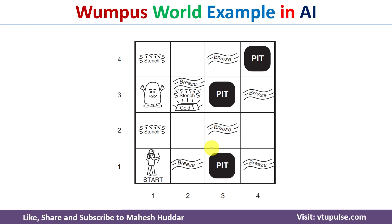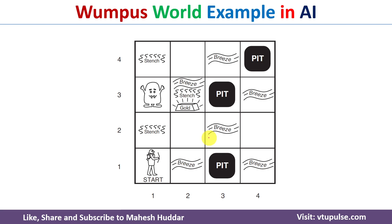This is how the Wumpus World example looks like. The agent is initially present in square (1,1). There are some squares where a pit is present — whenever the agent falls in a pit, the agent will die. There is one square where the Wumpus is present — whenever the agent enters that square, the Wumpus will eat the agent. There are squares where the agent will perceive breeze, meaning an adjacent square has a possibility of a pit. Whenever the agent perceives stench, there is a possibility of Wumpus in an adjacent square. Whenever the agent reaches the square where gold is present, it will perceive glitter.